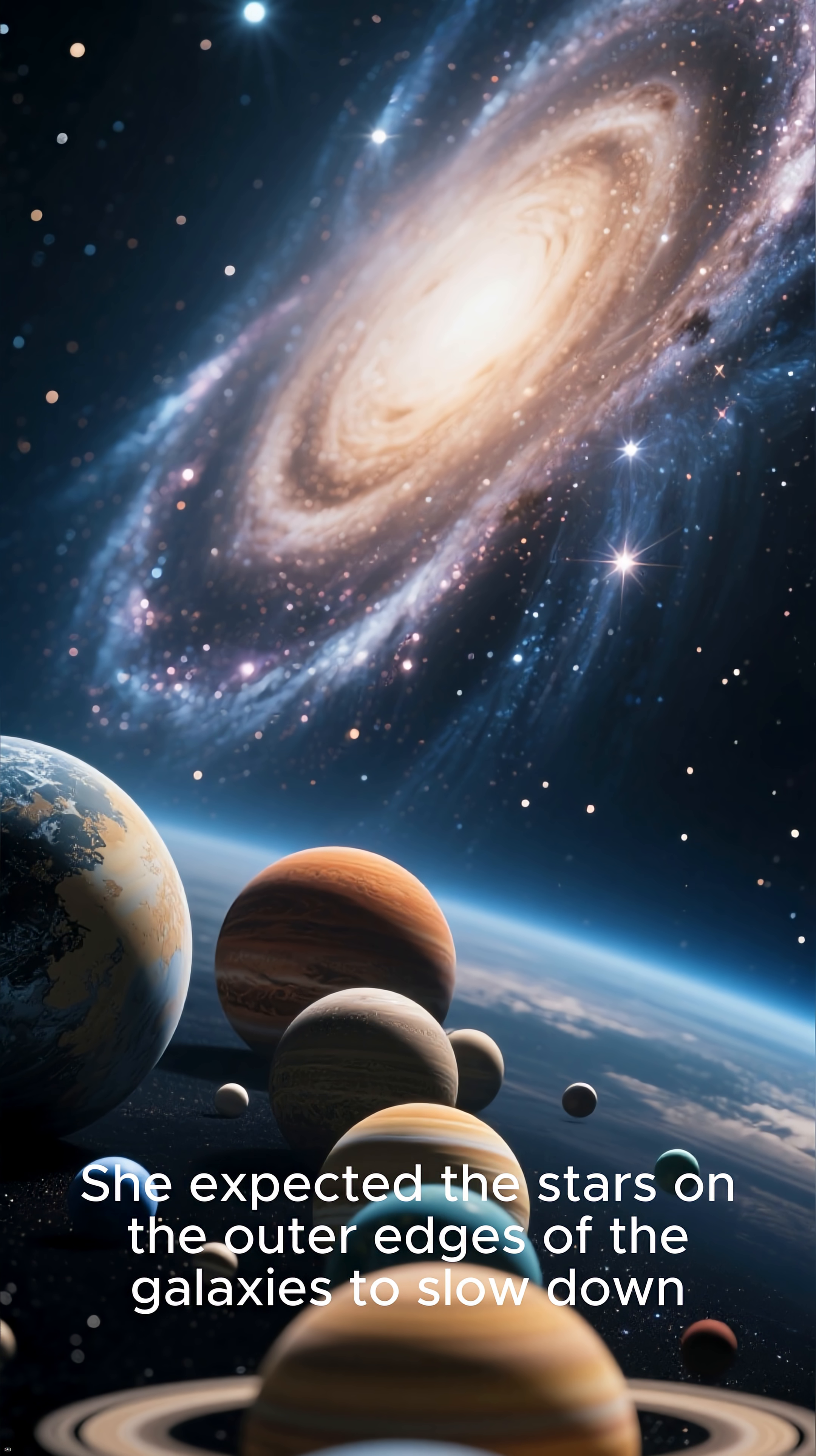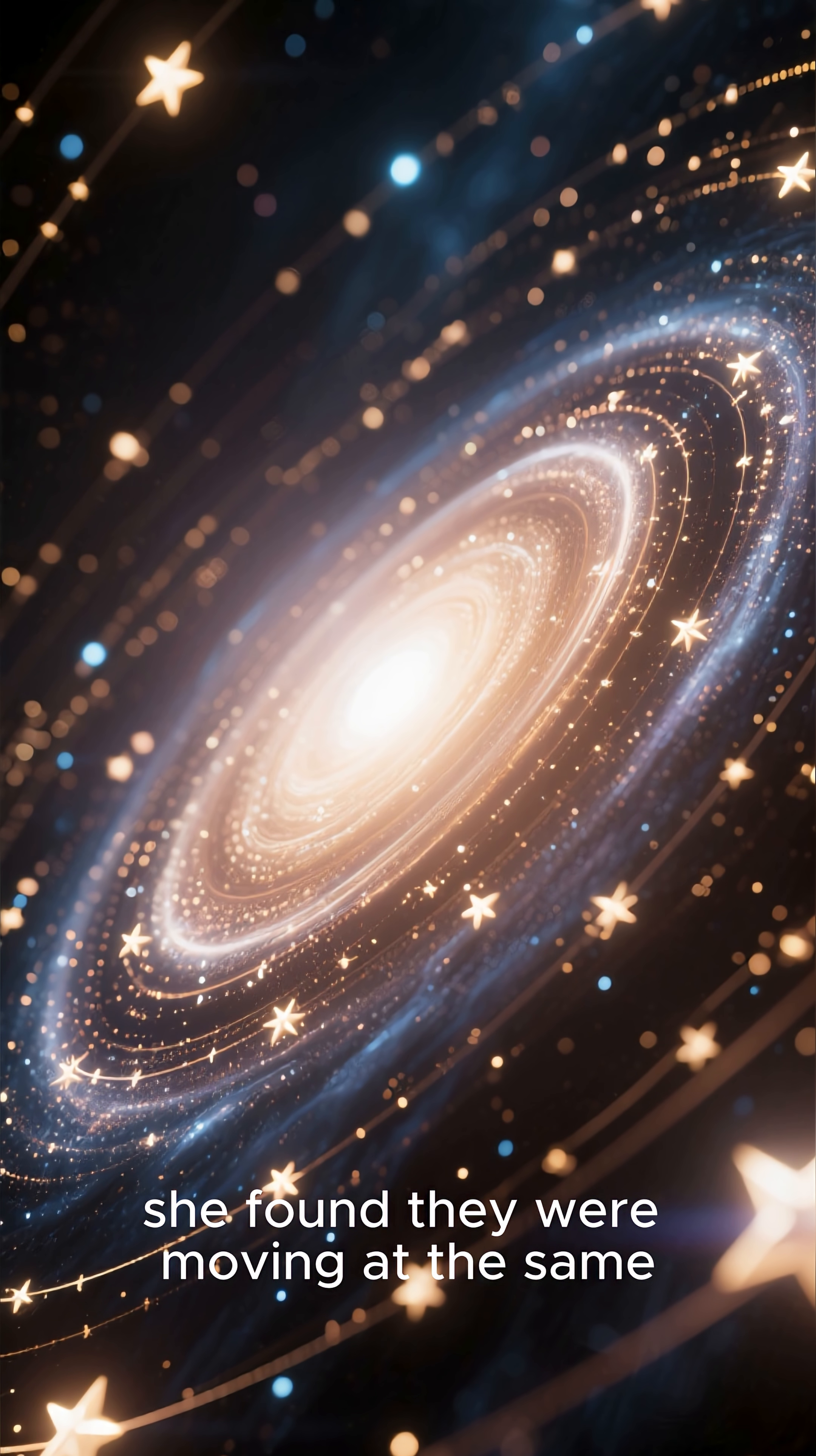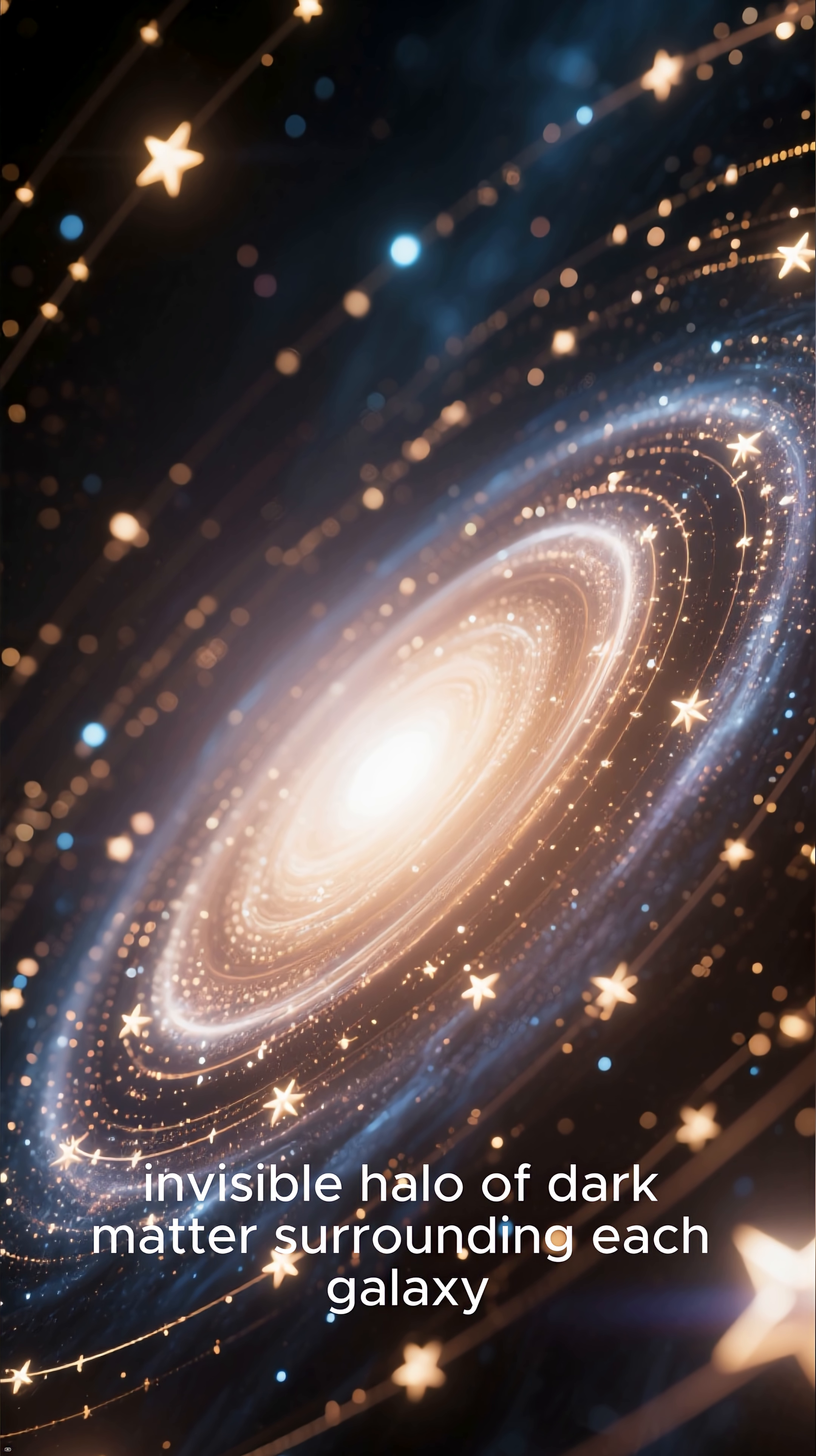She expected the stars on the outer edges of the galaxies to slow down, just as the outer planets in our solar system do. Instead, she found they were moving at the same speed as the stars closer to the center, a finding that could only be explained by a vast invisible halo of dark matter surrounding each galaxy.